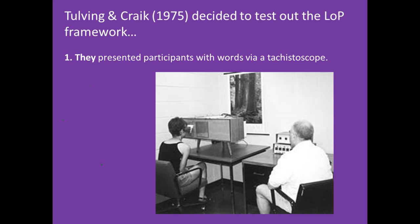So in 1975, Craik and Tulving decided to test out the Levels of Processing framework. They got 24 participants and presented them with 60 words via a tachistoscope. Each word was presented for 200 milliseconds — this was the day before PowerPoint! The tachistoscope was the only way of making sure that the words were presented for an exact amount of time. This is really good because it reduces extraneous variables — if some words were presented for one and a half seconds and others for two and a half seconds, that might affect the results.